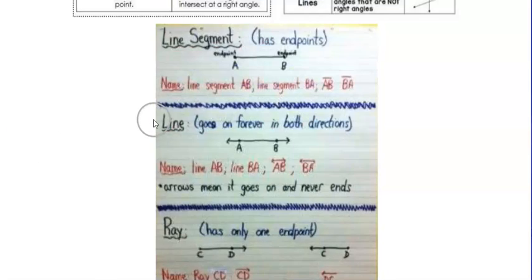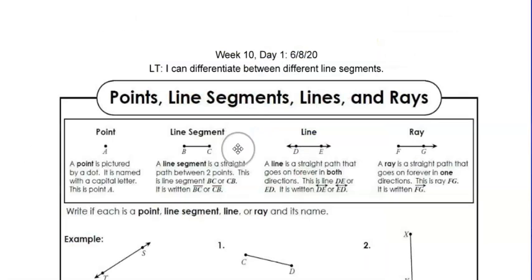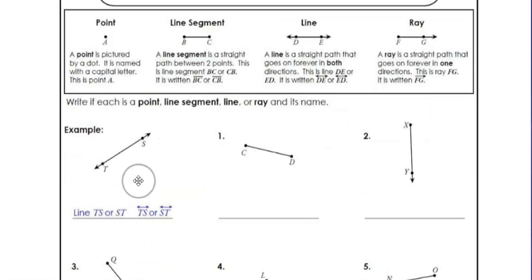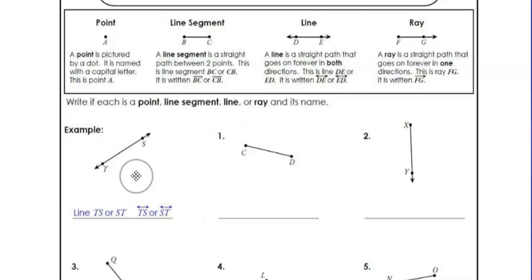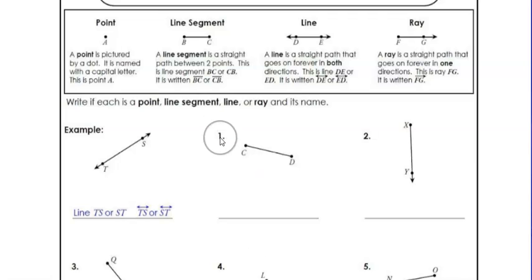This week you're going to be talking about different types of line segments. For today, Monday, the learning goal is: I can differentiate between different line segments. You're going to look at each example and tell me if it's a point, a line segment, a line, or a ray. You'll also write its name — you only need to write one form. For example, this one is a line, so you could call it line TS or line ST, with the line symbol above the letters.